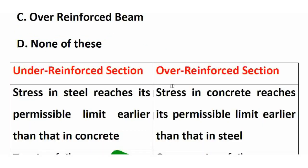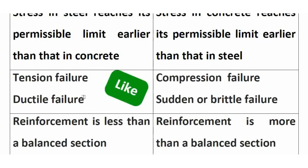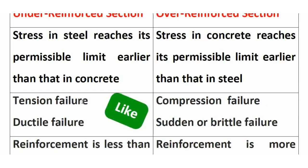In an under reinforced section, stress in steel reaches its permissible limit earlier than concrete. In a balanced section, concrete and steel reach their permissible values at the same time. In an under reinforced section, tension failure or ductile failure occurs, so there is a warning before failure. In case of over reinforced section, there is compression failure — primary compression failure.